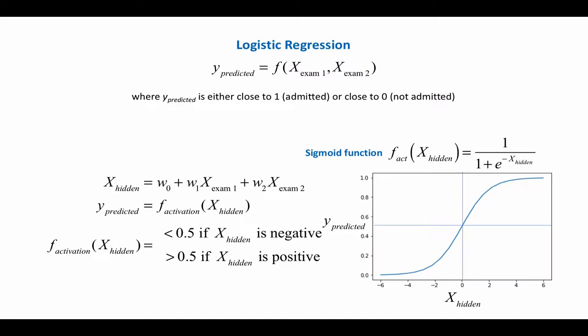We're going to take this prediction here, which we now call X hidden, and feed it into a so-called activation function, which is going to give us values between 0 and 1. The activation function we're going to use in this example is called a sigmoid function. Here's the mathematical expression for it.